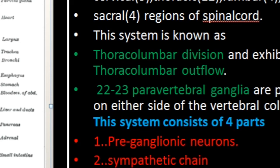The preganglionic neurons are shorter in size compared to the postganglionic neurons, which are long. The postganglionic neurons come out from the ganglia — they are longer in size, so the effect of the sympathetic neural system is widespread.